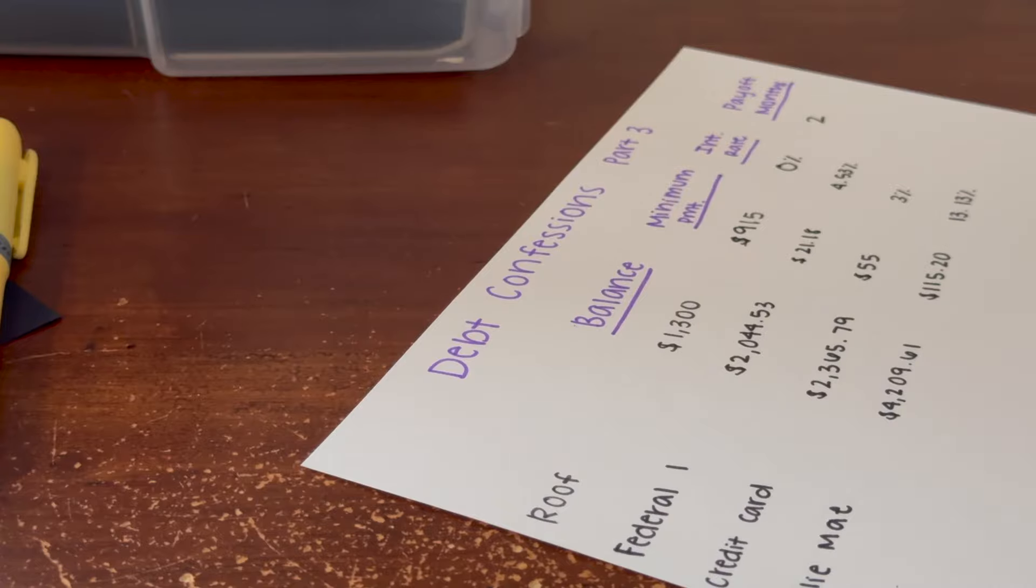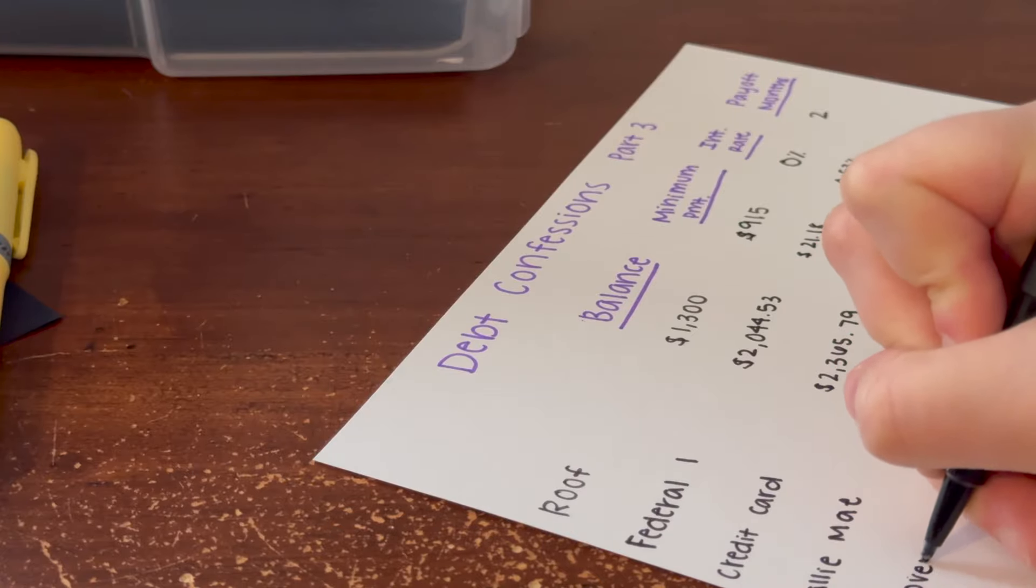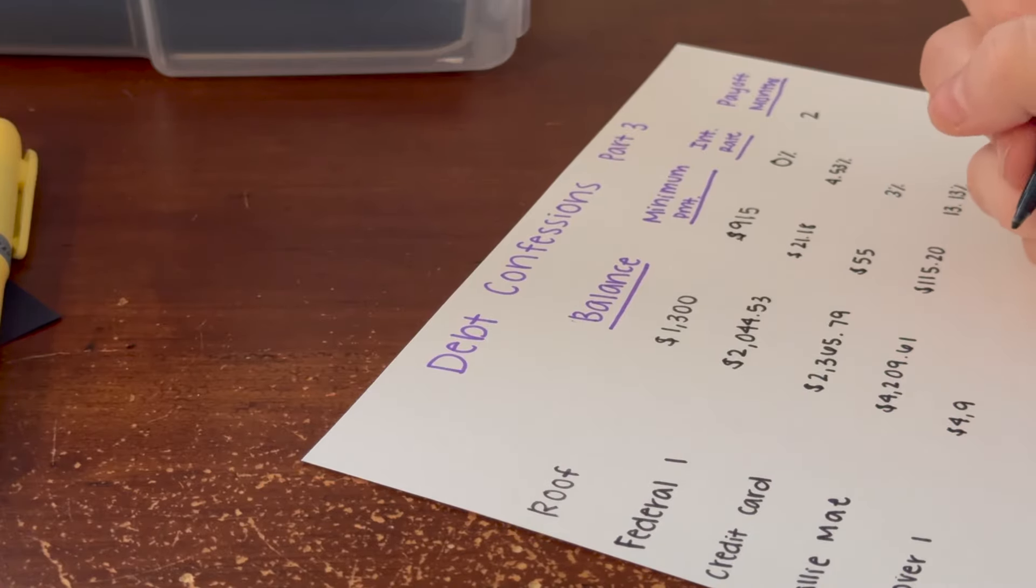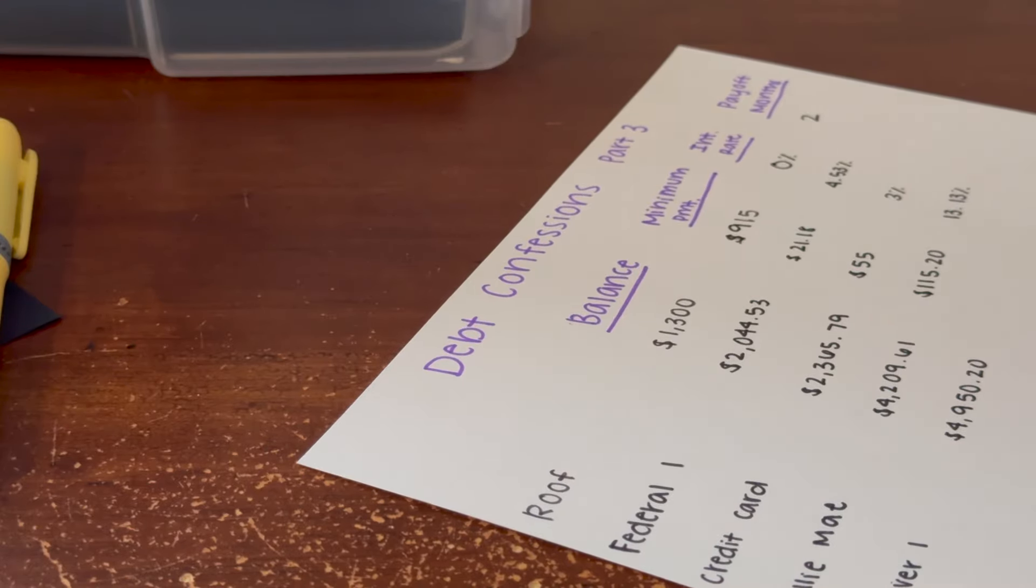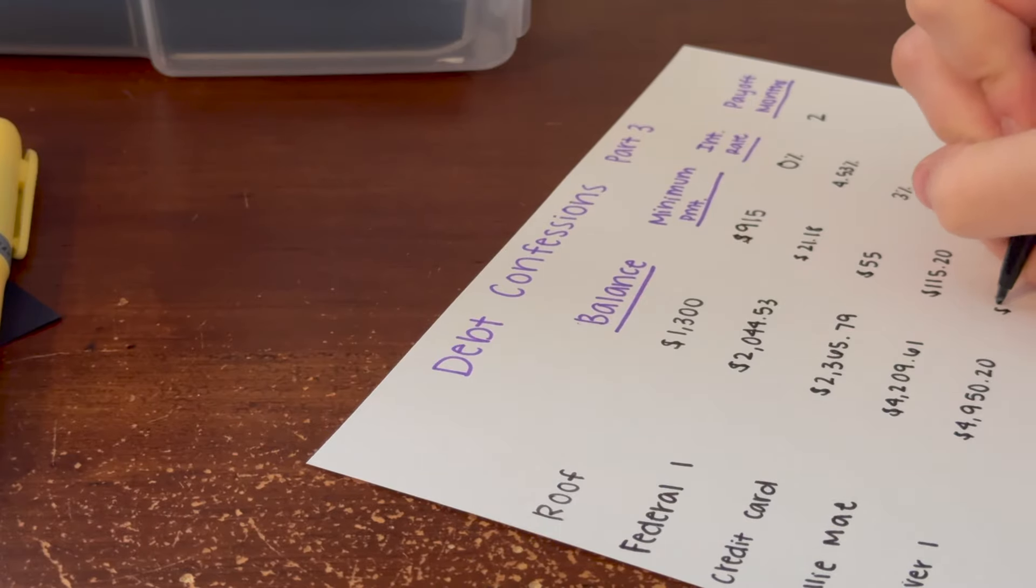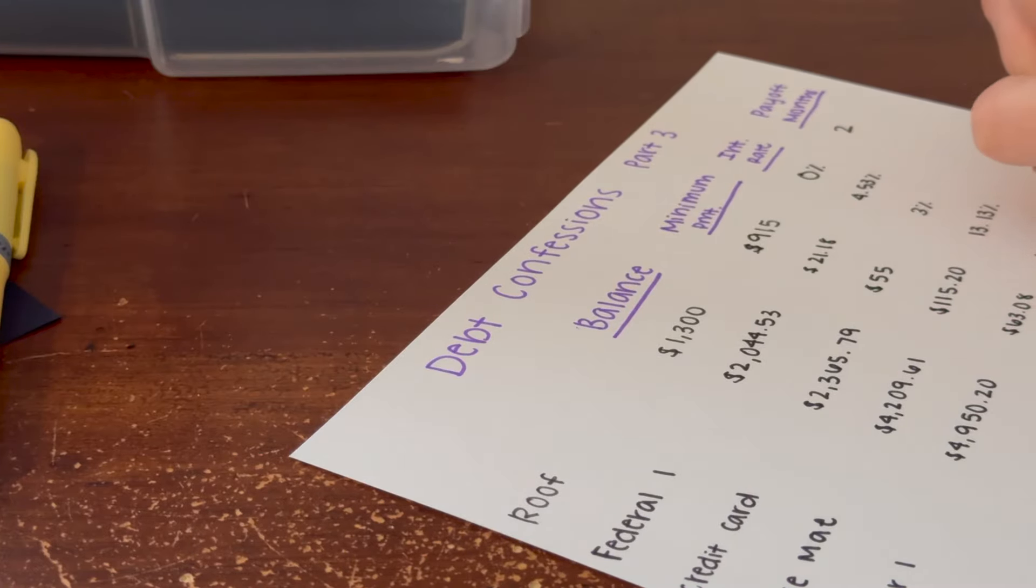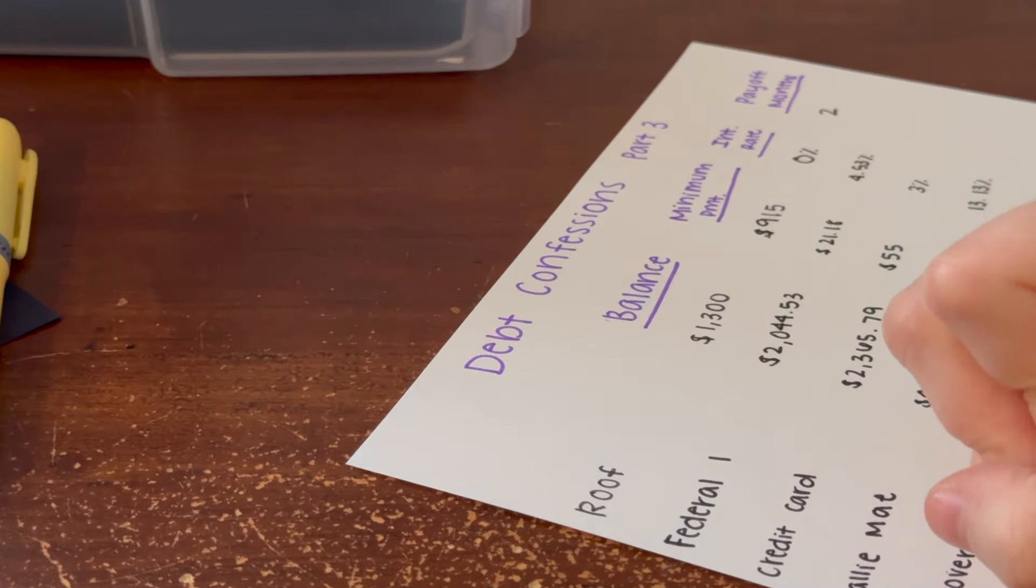The next one is my first Discover loan, so we're going to do this as Discover 1. Like I said, we're breaking them out. This has a balance of $4,950.20. This one also has a lump sum payment, so the portion of the lump sum payment that goes here is $63.08 and the interest rate on this piece is 11.84%.